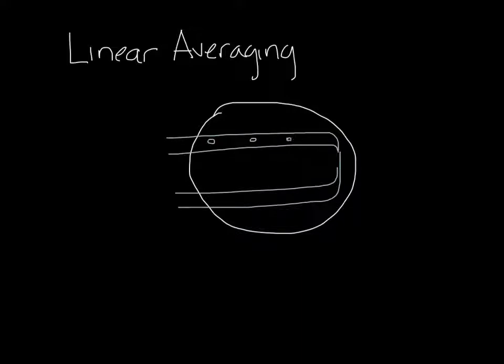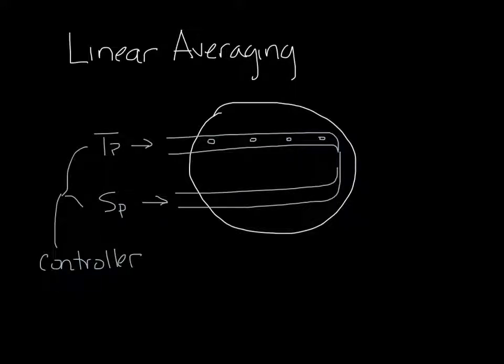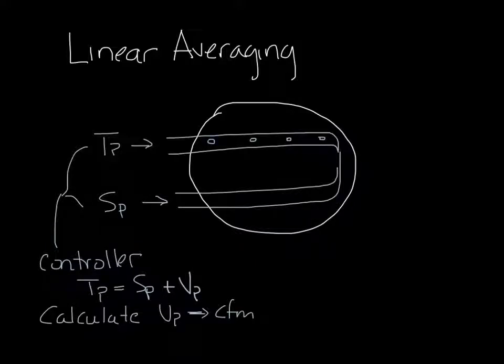The top one would have holes right here and the bottom one would have holes on the back side that you can't see in the drawing. So if you're looking into this flow sensor and the air flow is going in the direction you're looking, the top one would be measuring total pressure and the bottom one would be measuring static pressure. And then both of these are connected back to a controller. Total pressure is static pressure plus velocity pressure, so the controller can use this information from the flow sensor to calculate velocity pressure and therefore velocity and therefore CFM.